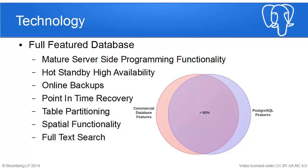Hot standby and high availability: you can run replicas of Postgres, with one master and all these replicas that you can query in real time. You can have an asynchronous mode where the replica is updated as quickly as it gets the information, or a synchronous mode where all replicas wait until they receive all the information from the master. Online backups combined with point-in-time recovery allow you to take snapshots without bringing your database down or affecting performance, and roll forward to any given point in time or transaction ID.